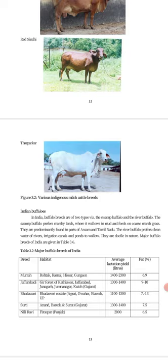The swamp buffalo prefers marshy lands where it wallows in mud and feeds on coarse marsh grass. They are predominantly found in parts of Assam and Tamil Nadu.